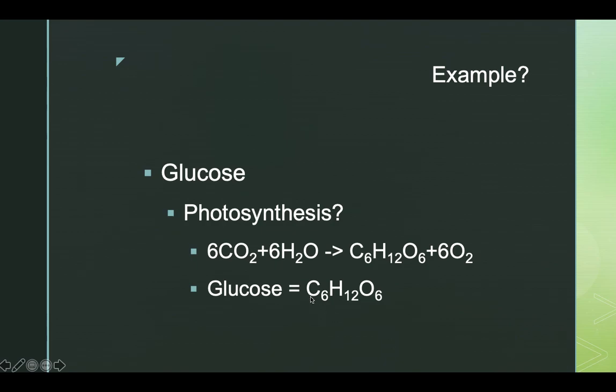And again, we look at these elements, C6. So there's six carbons, 12 hydrogens, and six oxygens. That goes back to what are carbohydrates made out of? Carbon, hydrogen, oxygen.